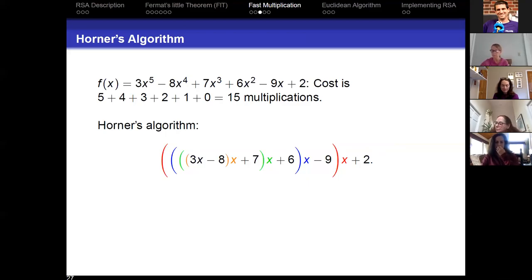So how does Horner's algorithm work? It all works by grouping. What I do is I look at 3x minus 8, multiply by x, add 7, multiply by x, add 6, multiply by x, subtract 9, multiply by x, and add 2. Let's see what happens to the 3x. 3x times x is x squared, times x is x cubed, times x is x to the fourth, times x is x to the fifth: 3x to the fifth. Minus 8x, minus 8x squared, minus 8x cubed, minus 8x to the fourth. And you can see as you go through this, you get exactly the same function you started with.